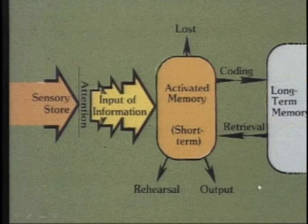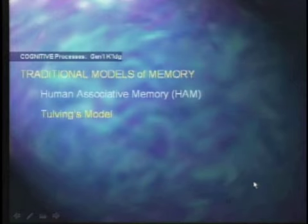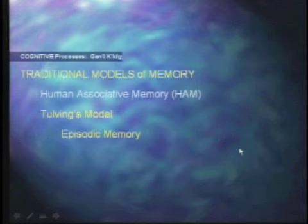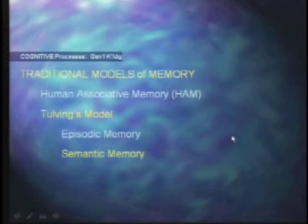That was supplanted by the work of Tulving. Tulving's model proposed that we can instead store things in terms of episodic memory — that is, when, where, and what actually occurred in our given life at any time. There's always an implied personal referent in this memory; it involves things that have happened in your individual life. Your episodic memory is different from mine, which leads us to a second element: semantic memory, which we're going to spend more time with today.